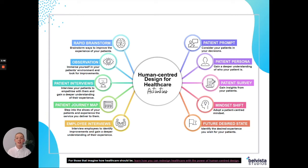Once you've asked those two questions, you just want to go through all of the answers from your patients and see if any themes or trends come up of ways that you can improve. We think that with around five patients, once you speak to five different people, you tend to start getting similar answers. But of course, if you feel like you need more insights, you can ask more. Generally, five gives us pretty valuable insights.